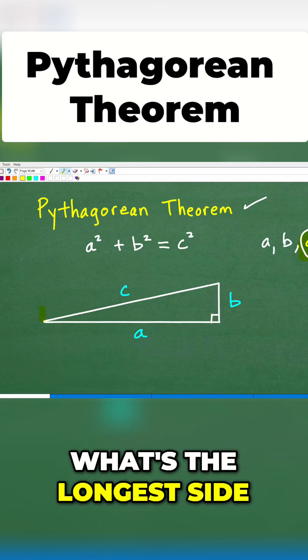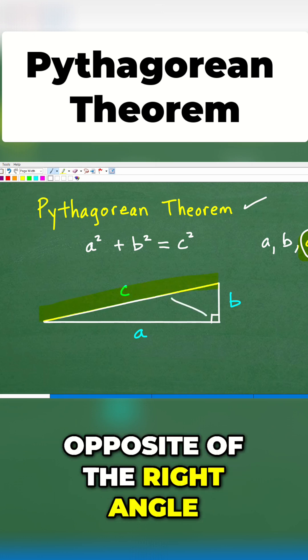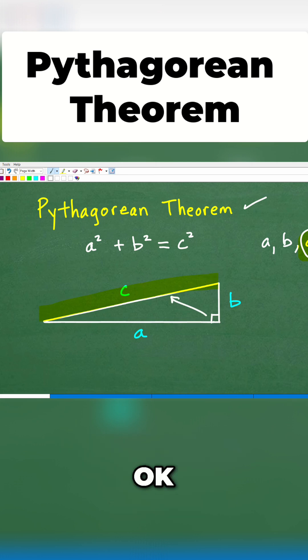So if you look at this triangle, what's the longest side? It's this side. And if you can't really see that, it's always the side opposite of the right angle, okay?